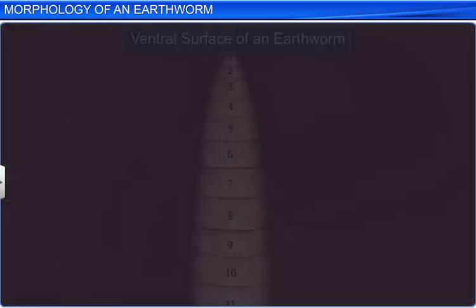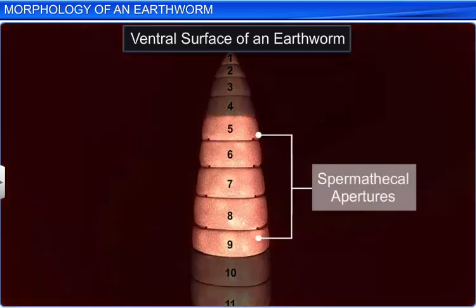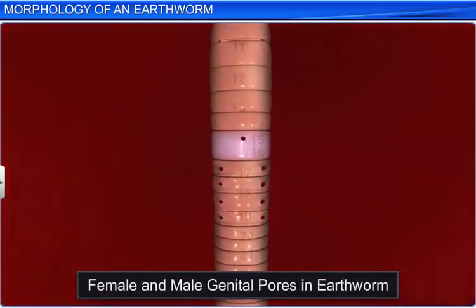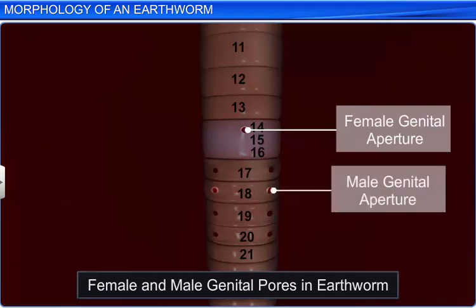The 5th to the 9th segments of the body have four pairs of spermathecal apertures on the ventral lateral sides of the intersegmental grooves. The 14th segment has a single female genital pore, while the 18th segment bears a pair of male genital pores.